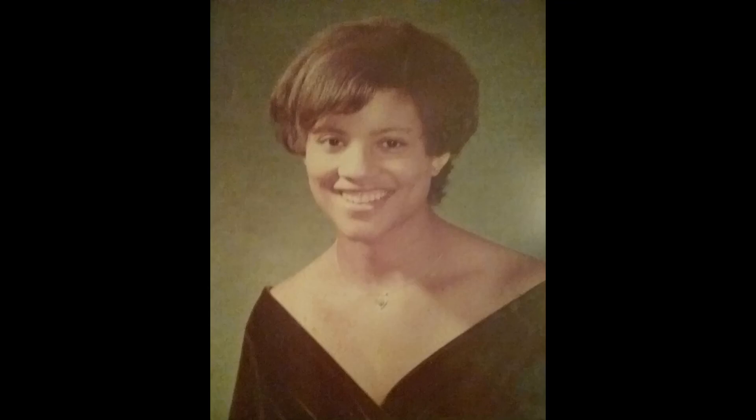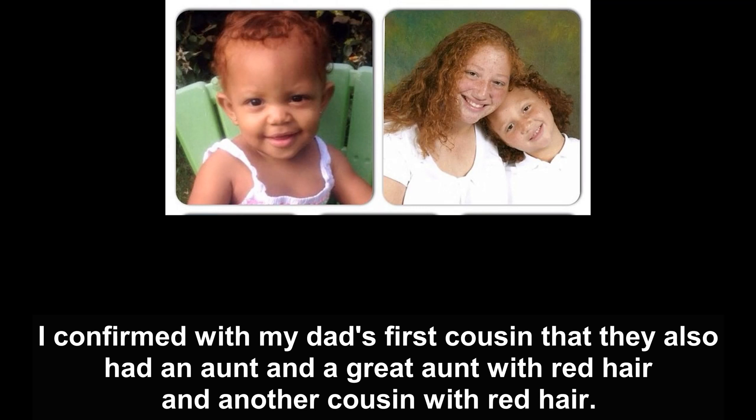If my paternal great-grandmother had Scottish ancestry — which she did, as her maiden name was Scottish — then she could also have been a carrier. My paternal grandparents had five children and none of them had red hair, though their daughter did have freckles, which is often associated with red hair. Aunt Pam could also be a carrier, and her children and grandchildren could be carriers as well. On my side, I'm only aware of my dad's first cousin, two of my first cousins, and my daughter having red hair — but there are most likely many more carriers, and I'm sure we'll see red hair appear again in upcoming generations.